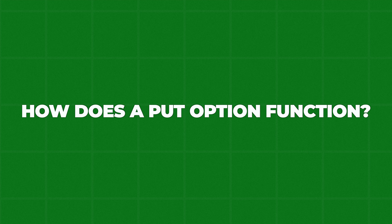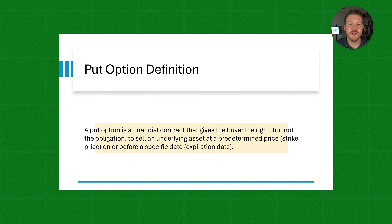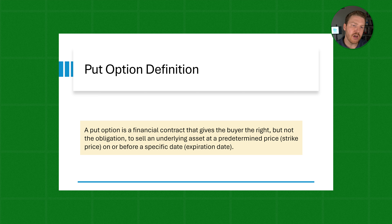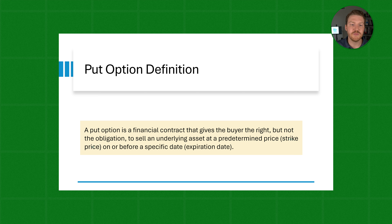Let's dive right into how that works. But first, let's talk about how a put option functions. A put option is a financial contract that gives the buyer the right, but not the obligation, to sell an underlying asset at a predetermined price — which we'll call the strike price — on or before a specific date.